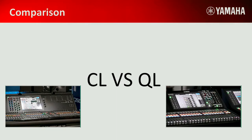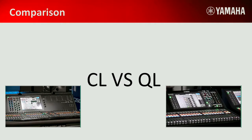Regarding use on a choir: Dugan has two systems — the speech system and the music system. The one implemented in the QL is the speech system. For choir applications, you'd want to look into the Dugan music system, which is a separate product designed for that situation.